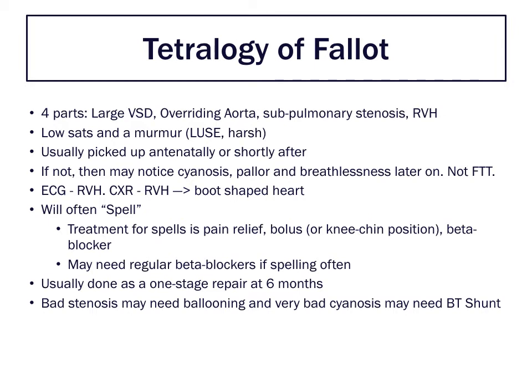You can give a fluid bolus to increase the amount of blood going through the right side of the heart, treating dehydration and bringing heart rate down. You can bring the child's legs up to their chest or chin to deliver blood trapped in the legs, or give IV beta blockers in extremis. Some children need regular beta blockers to prevent spells. If spells are frequent, we generally do a one-stage repair at six months, though sometimes balloon dilatation across the pulmonary valve is needed earlier.